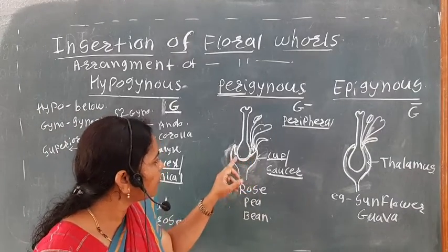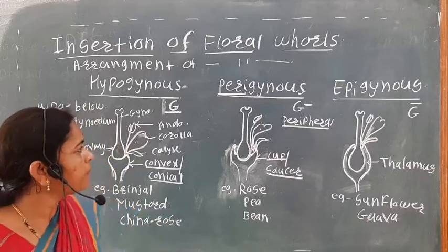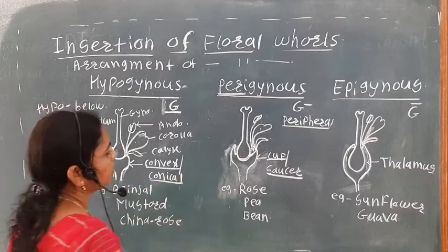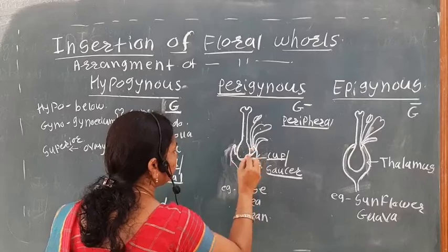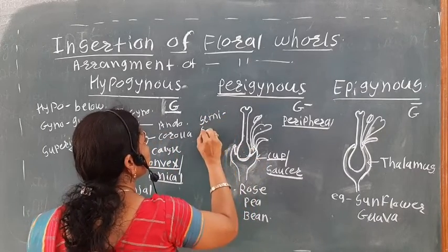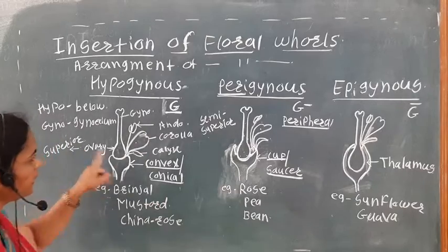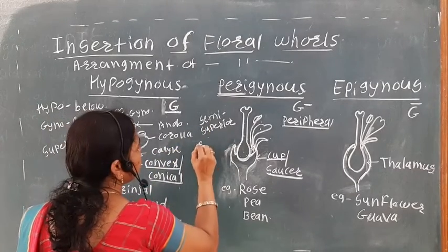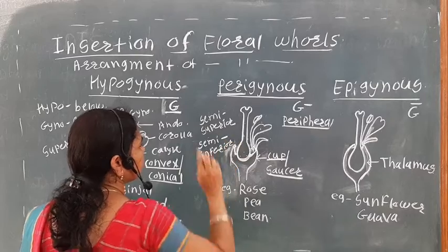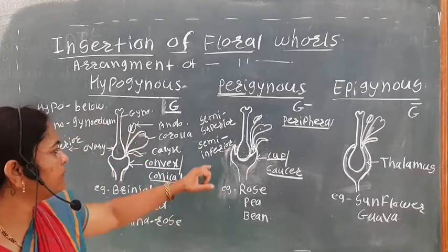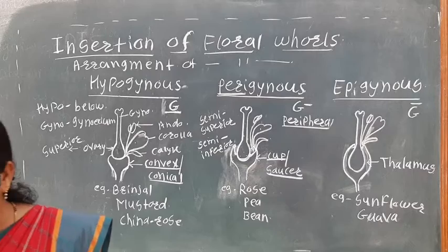In the perigynous flower, the gynoecium includes the stigma, style, and ovary. The ovary is semi-superior or semi-inferior. That is, the ovary is partly superior and partly inferior.